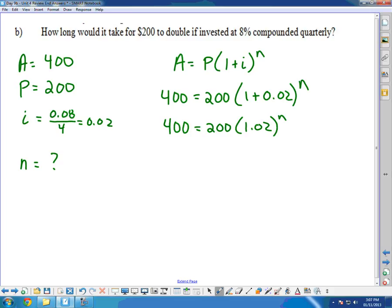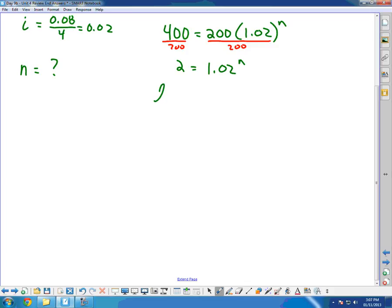And we need to solve for N. Again, N is up in the exponent, so we're going to have to use our skills from this unit. Divide by 200 to get the term that has N by itself. So this is nice, 400 divided by 200 is 2 equals 1.02 to the power of N. Again, we can't find a common base, so we're going to have to take logs. Bring the N down, and now we can isolate by getting rid of that. Divide it to the other side.